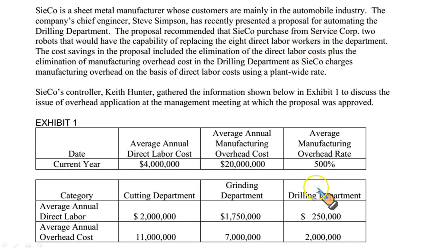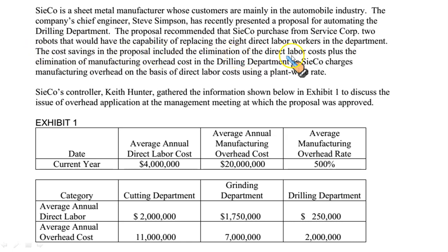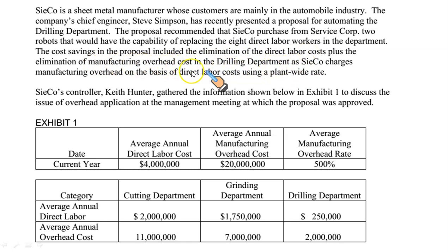Currently, eight workers work in the drilling department, so they will be replaced by these two robots. The cost savings in the proposal included the elimination of direct labor cost, plus the elimination of manufacturing overhead cost in the drilling department, as SECO charges manufacturing overhead on the basis of direct labor cost using a plant-wide rate.